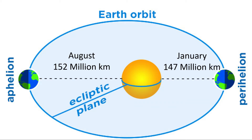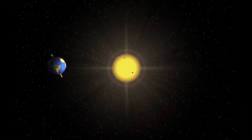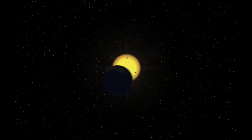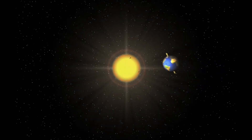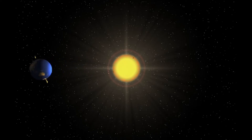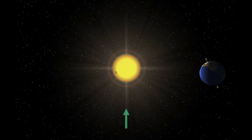The elliptical orbit is not the reason seasons occur — we will be looking at that later. This is just to show that the Earth's orbit is not a circle. Here we have the Earth going around the Sun in its elliptical orbit. We need to put a mark on the orbit so we can count the number of full orbits that the Earth has done, shown with a green arrow.